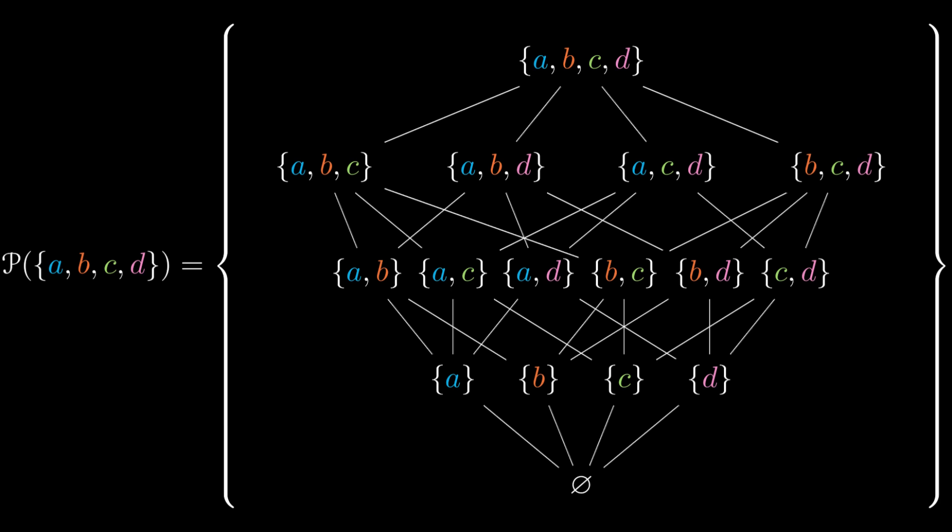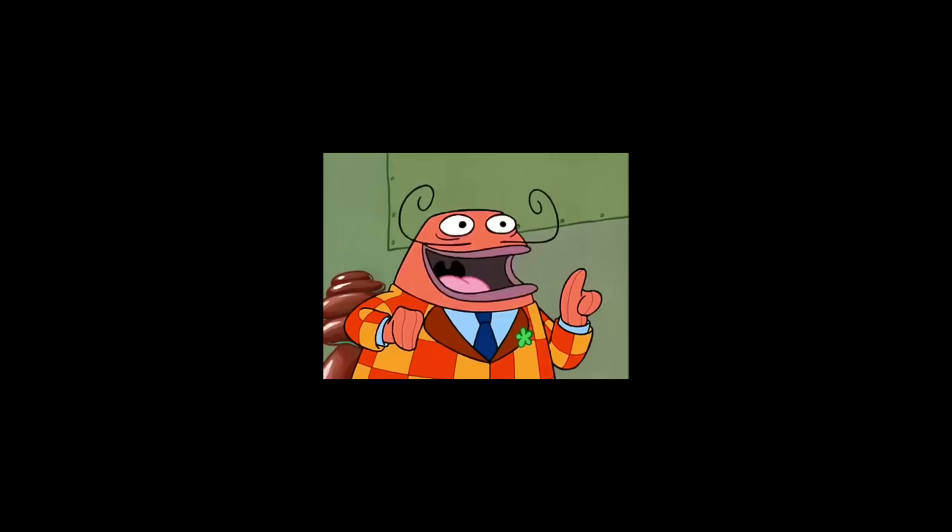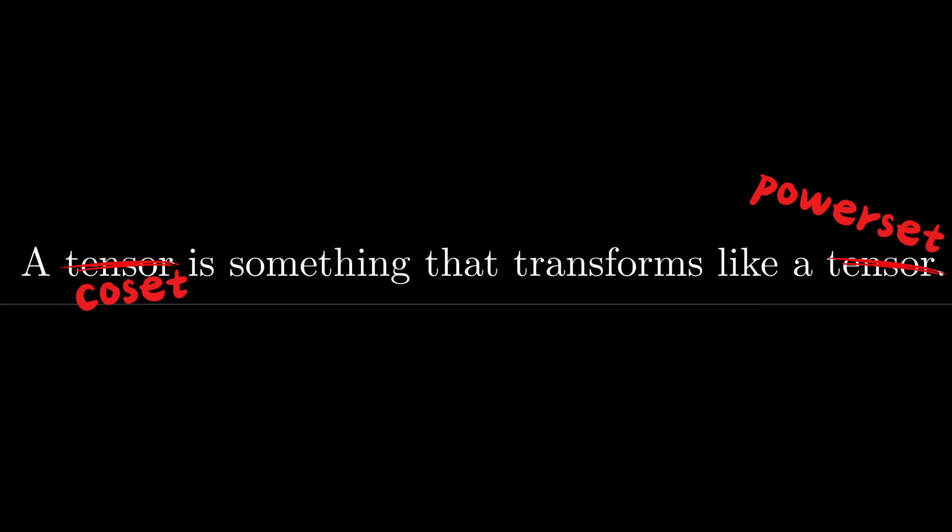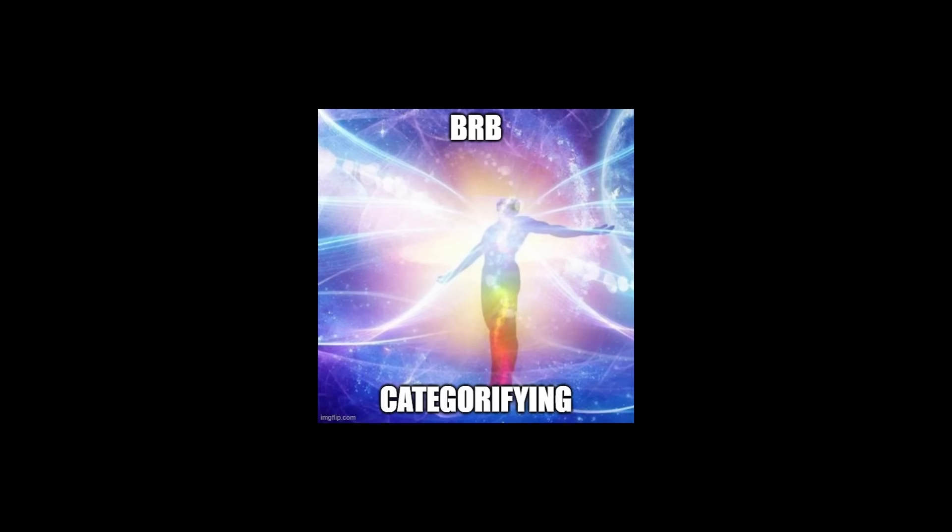Our goal right now is to understand what makes something a power set so that we can use that as an intrinsic description of a co-set. The problem here is that we're not thinking categorically. We've focused too much on the objects of the category when we should instead be thinking about the maps in between.